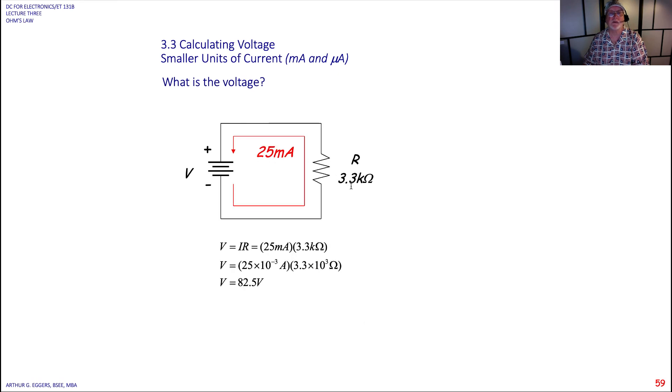25 milliamps pumped through a 3.3 k ohm resistor. Again, we've got 10 to the minus third, 10 to the third. They cancel. It leaves us 82 and a half volts.